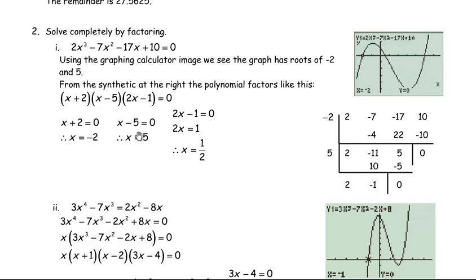In question two part a, we're asked to solve a cubic completely by factoring. I used a graphing calculator to identify roots rather than pure trial and error. The polynomial needs a remainder of zero for a factor to work — otherwise it's not actually factoring. From the graph, the curve passes through x equals negative 2, so negative 2 will work. Without a calculator, you'd try integer factors of the constant 10: plus or minus 1, 2, 5, 10, plus potentially those over the leading coefficient 2.